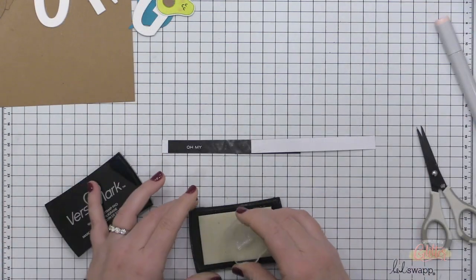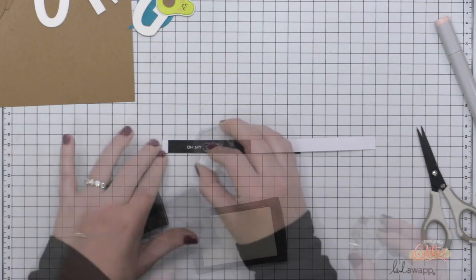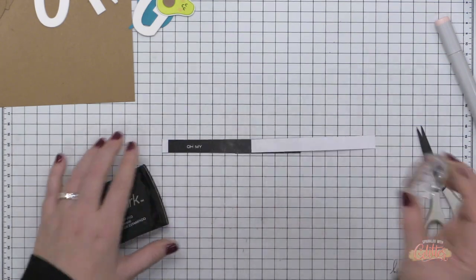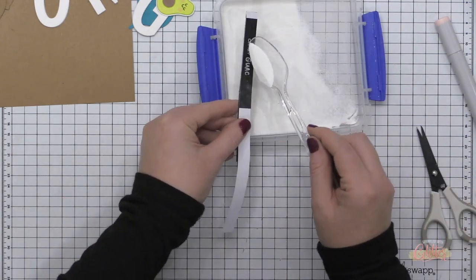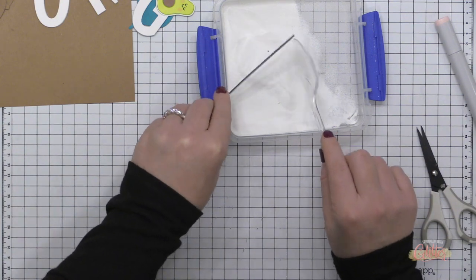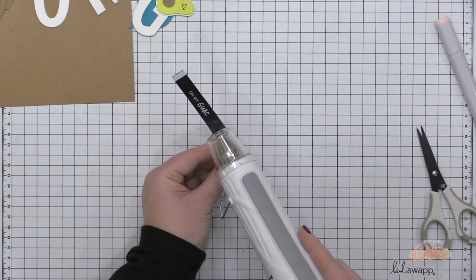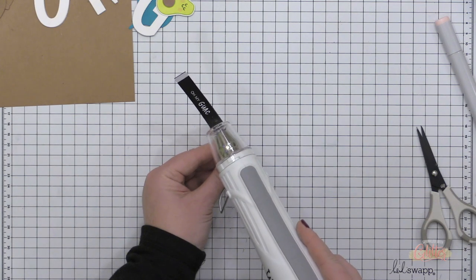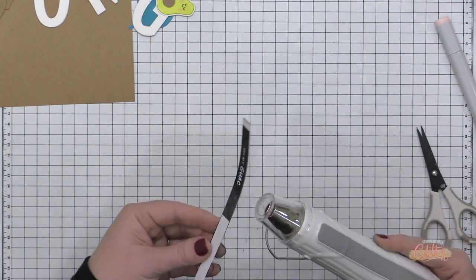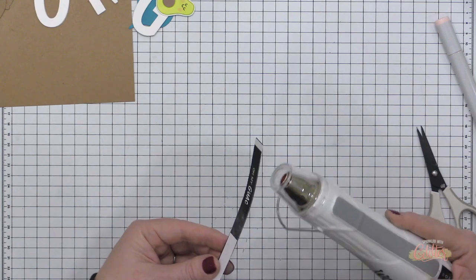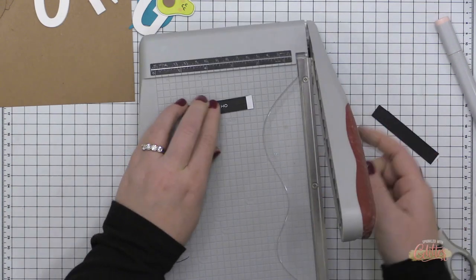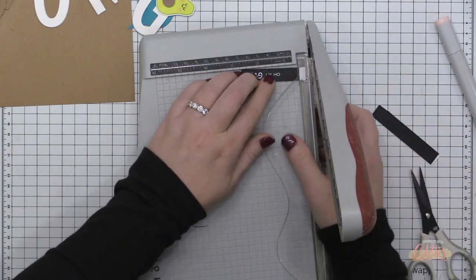And then I took one of the sentiments from the stamp set and there's the word guac in it. I just trimmed that off, stamped it in some Versamark ink onto the surface of this little sentiment strip, added some white embossing powder and then heat set that with my heat tool. And I did prep the surface of this little black strip with my powder tool before I stamped and heat embossed on it.